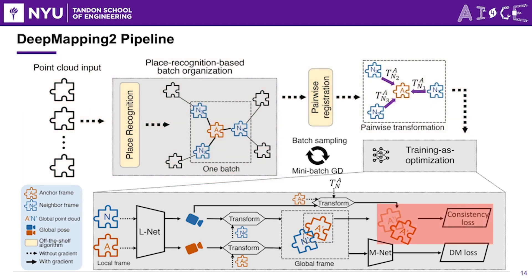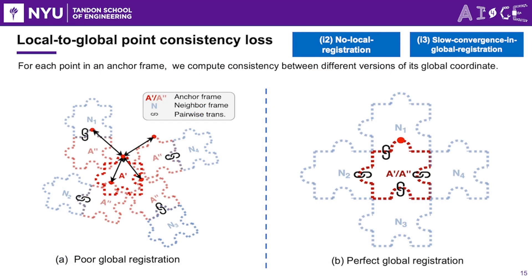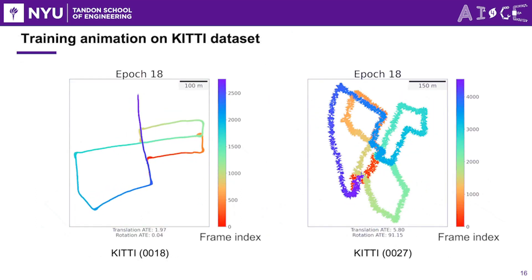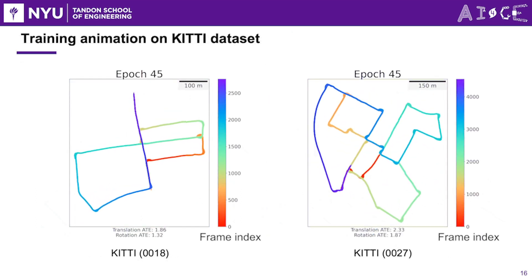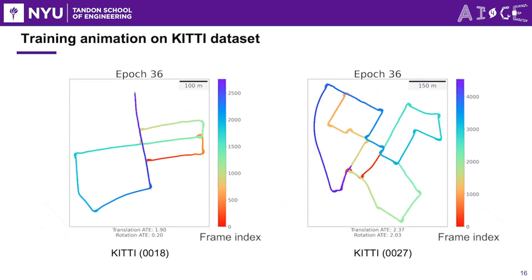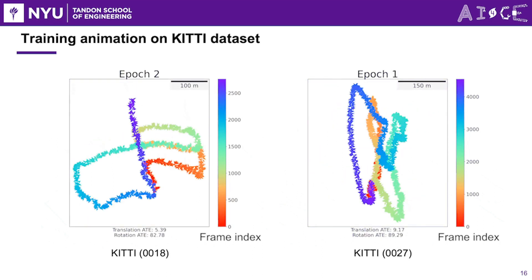The training step is almost identical to original DeepMapping, except that an important consistency loss is added. To address the issues of no local registration and slow convergence in global registration, we introduce the local-to-global point consistency loss. This loss measures the consistency between different versions of global coordinates of each point in the anchor frame, obtained from different batches. The animation shows that the network converges quickly to an optimal state, and we demonstrate ATEs for two KITTI sequences.